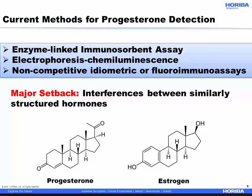Now, immunoassays such as ELISA, electrophoresis chemiluminescence detection, and noncompetitive idiometric or fluoro immunoassays have been the most widely used method for the detection of progesterone in different matrices. These tests require very carefully controlled procedures, skilled experts to carry out the analysis, and labelled probes to detect the steroid. However, the major drawback of these clinical tests is the high levels of interference arising from the structural similarities of different steroid hormones.